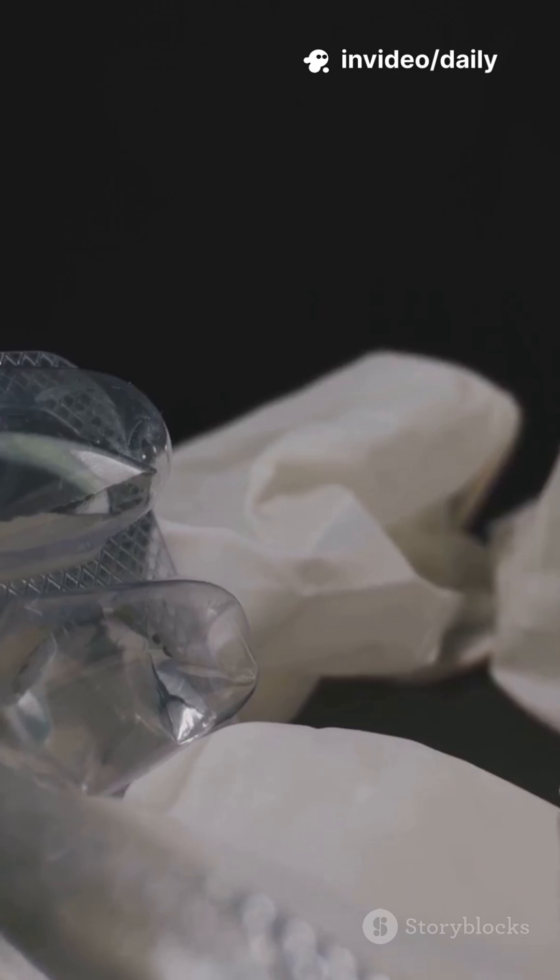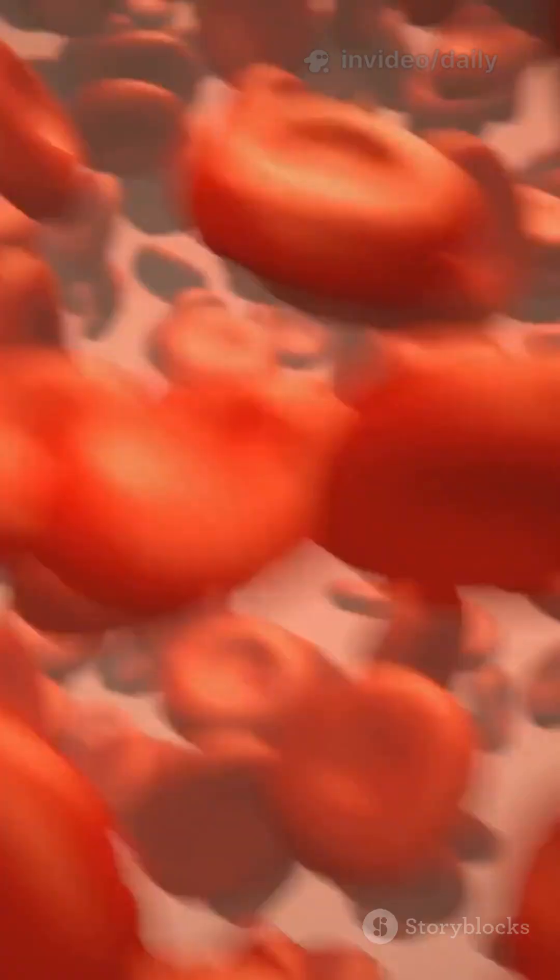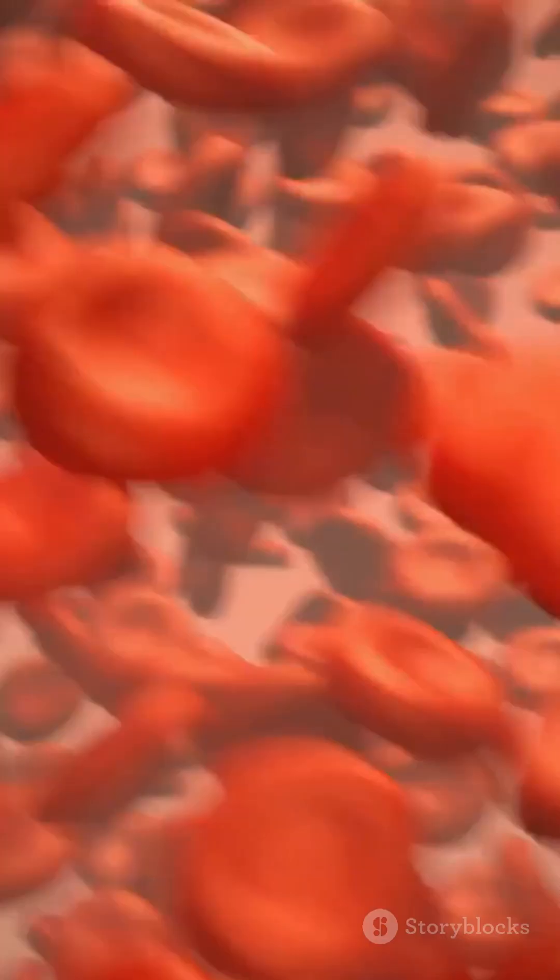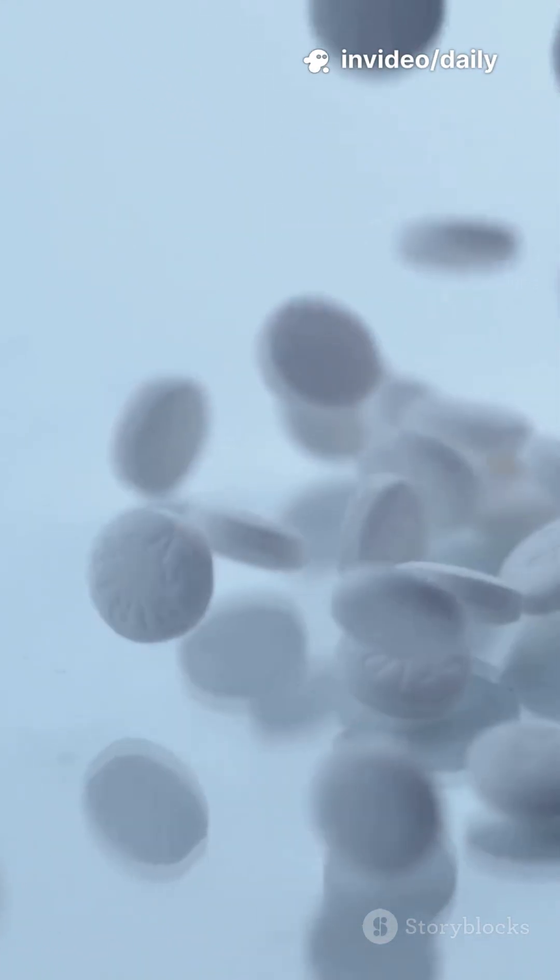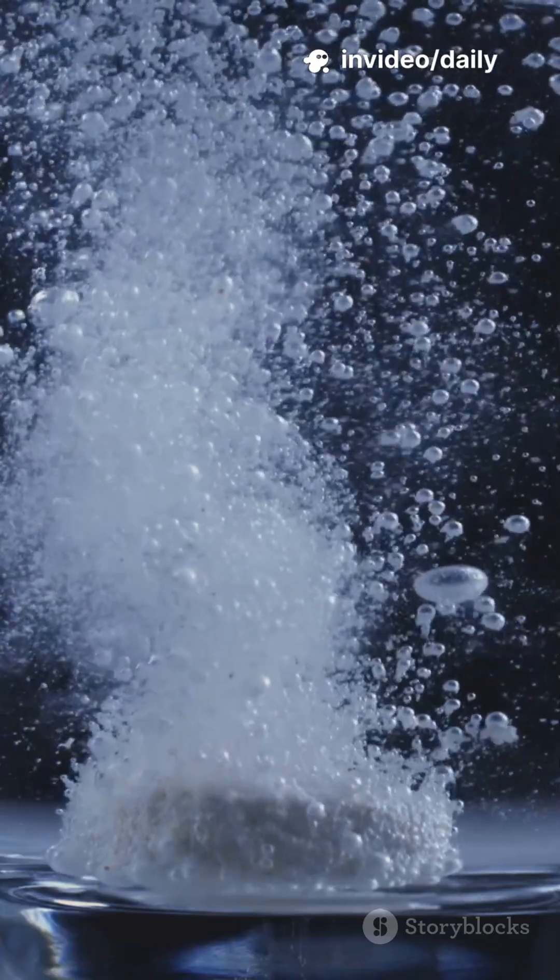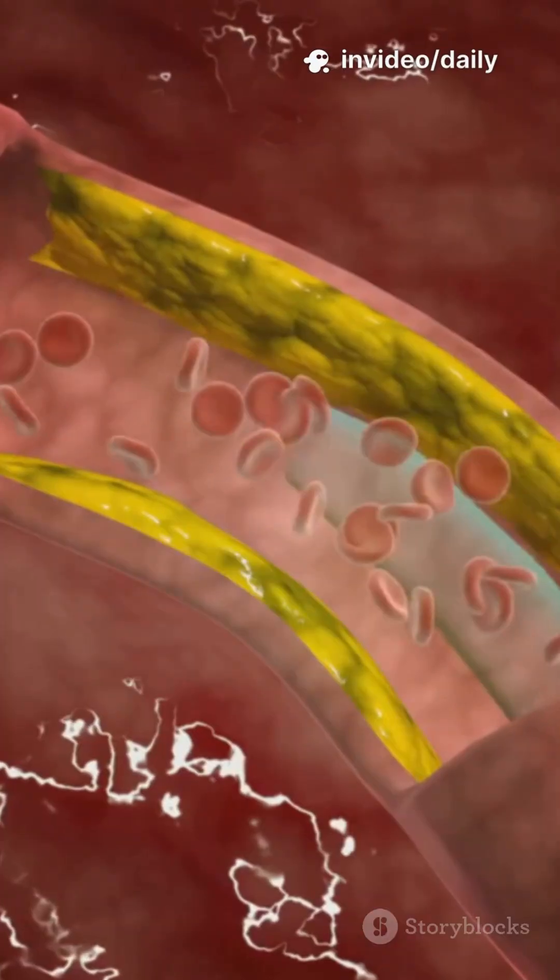Enter aspirin. Aspirin targets an enzyme on platelets called COX-1. It acetylates it. Shutting it down. Result: less thromboxane A2. That clump together signal. Platelets don't aggregate as easily. The clot stops growing.